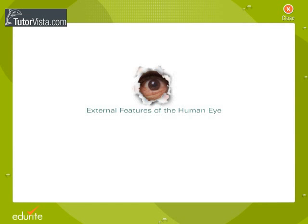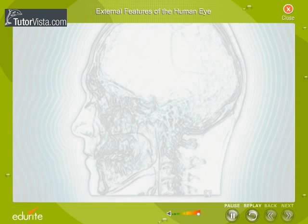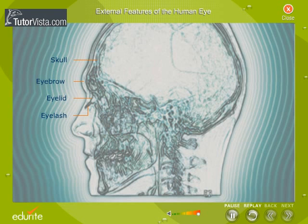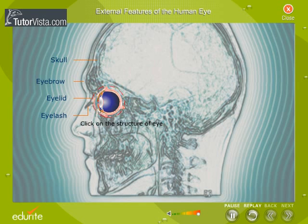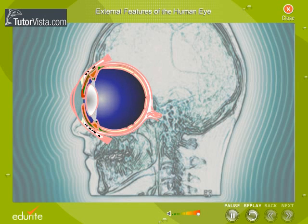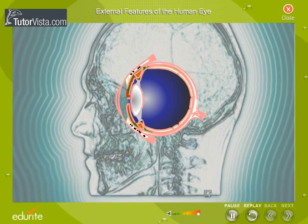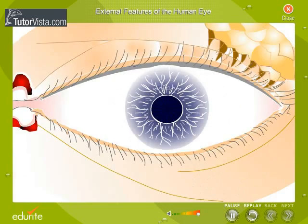External Features of the Human Eye. The position of the eye in the human body is as shown here. Click on the internal eye structure to view the external features of the human eye. Here are the external features of the human eye as seen from the front.